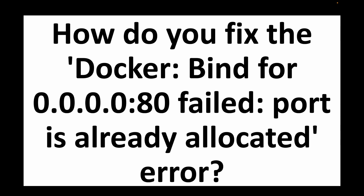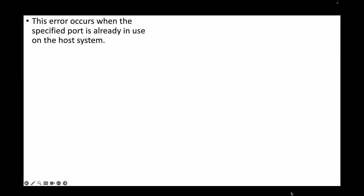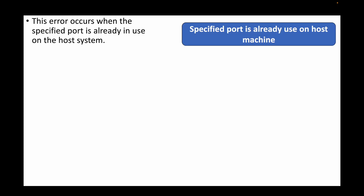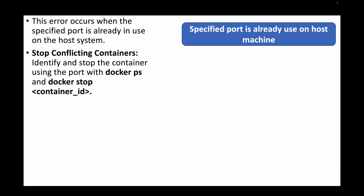The next question is: how do you fix the 'Docker bind for 0.0.0.0:80 failed — port is already allocated' error? When you start a container on a particular port that is already in use, you won't be able to start another container on that same port number. This error means the specified port is already in use by another container.